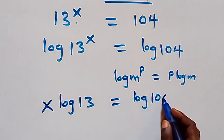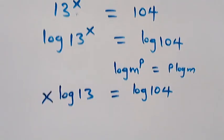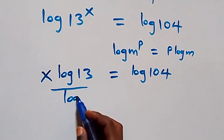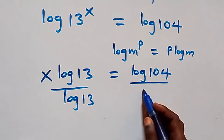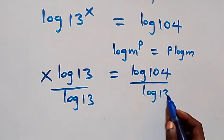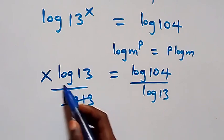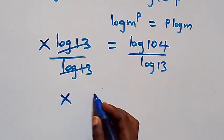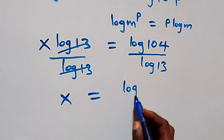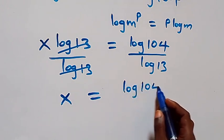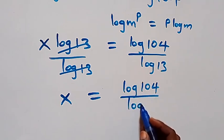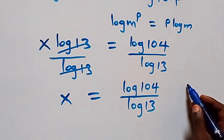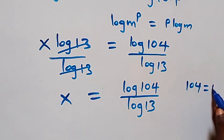From here, the next step: we divide both sides by log 13. The log 13 terms cancel each other and we have x left here, equals to log 104 over log 13.